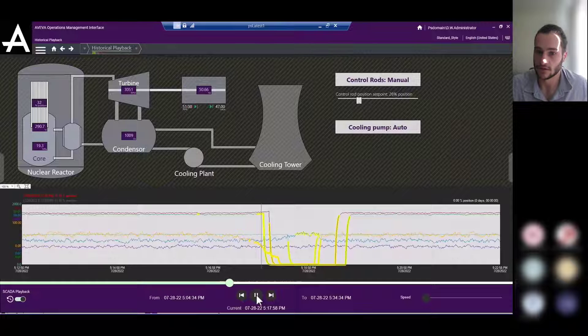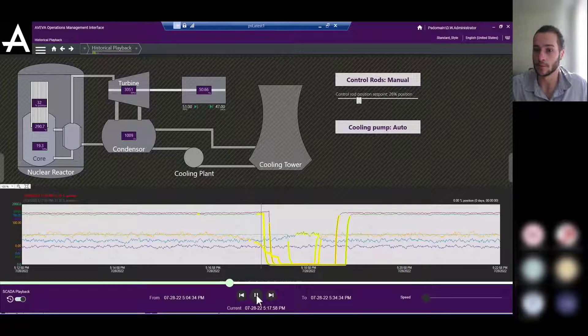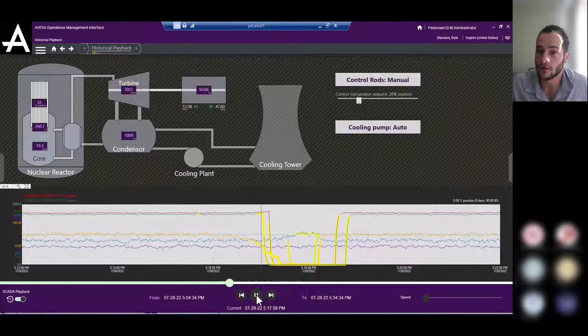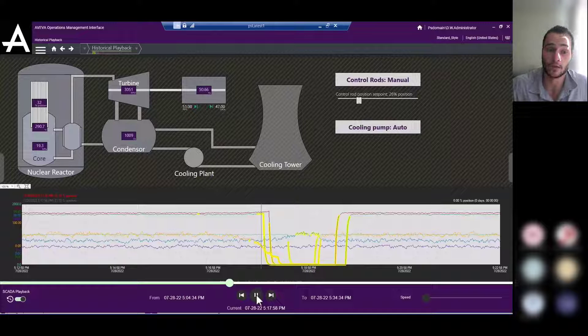But this has actually been improved with 2023. So now if there is no available historical attribute, then the feature will display the live values of the attribute.